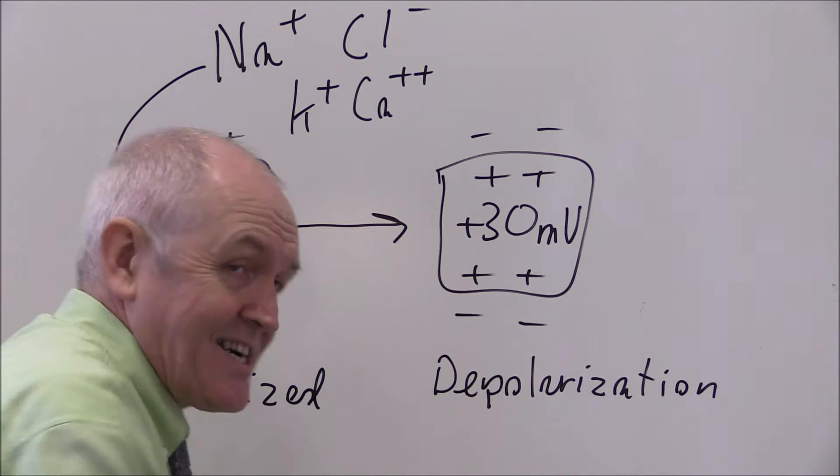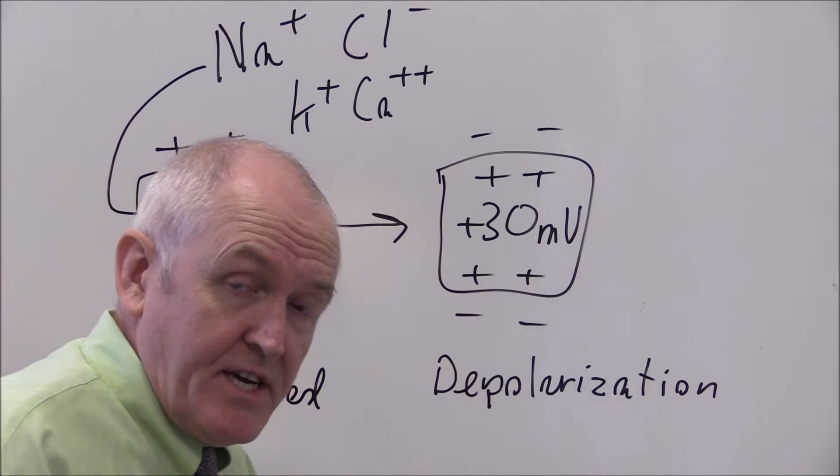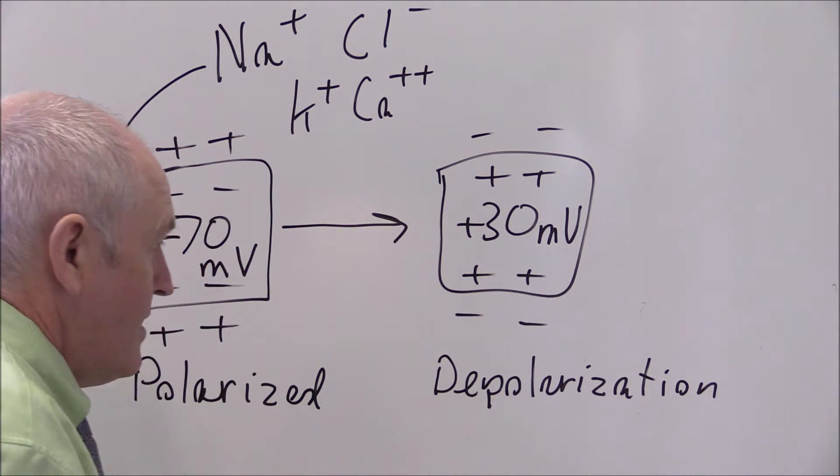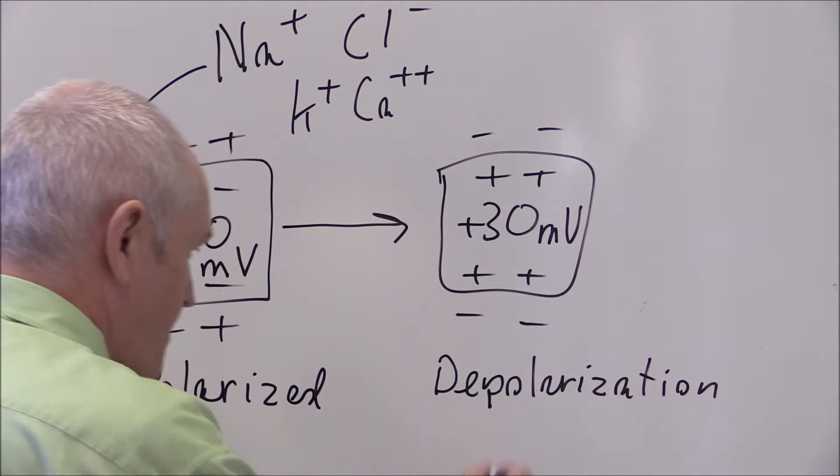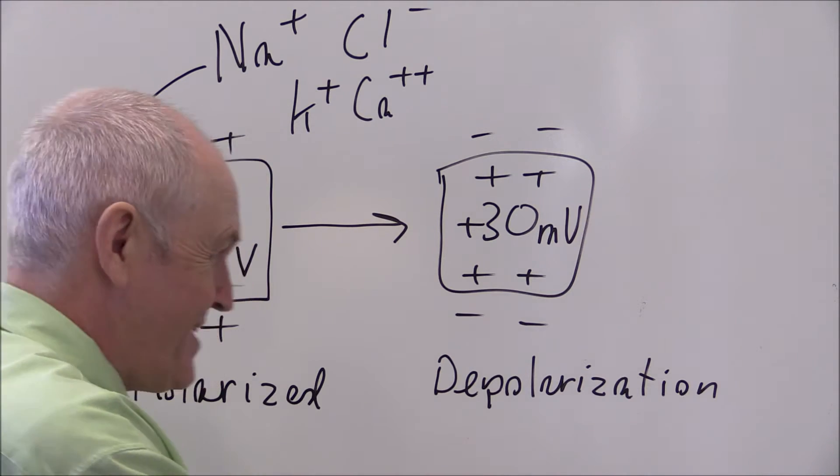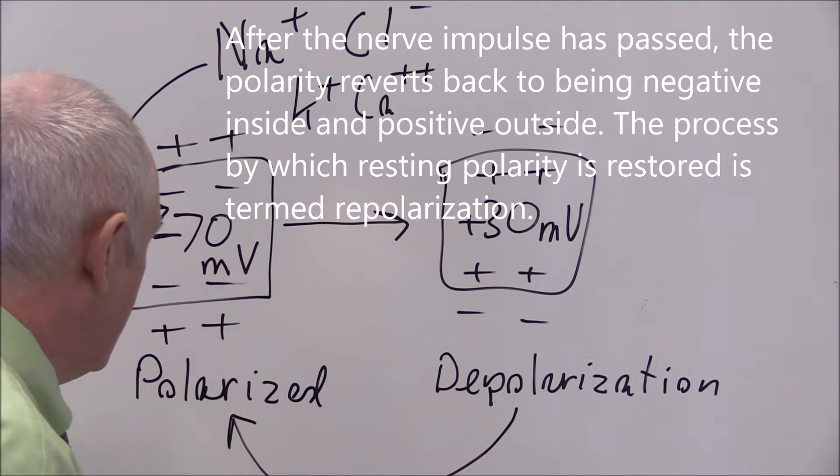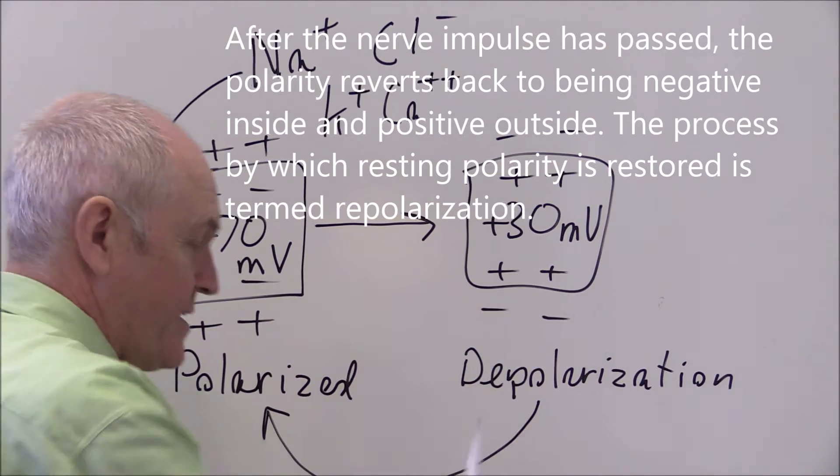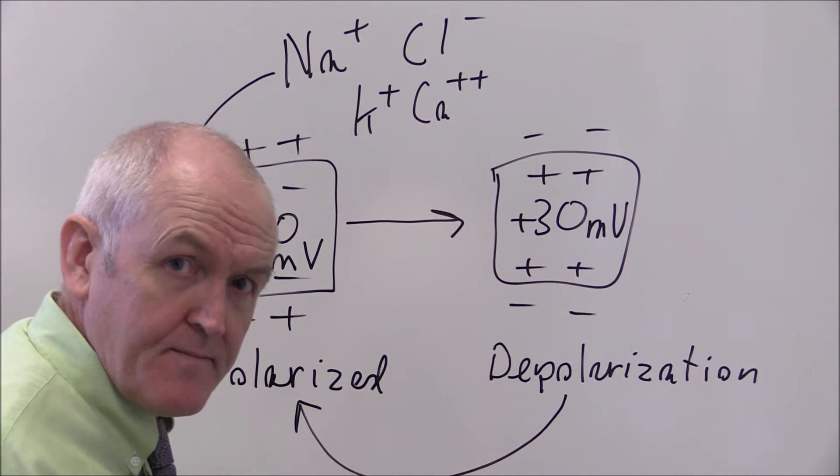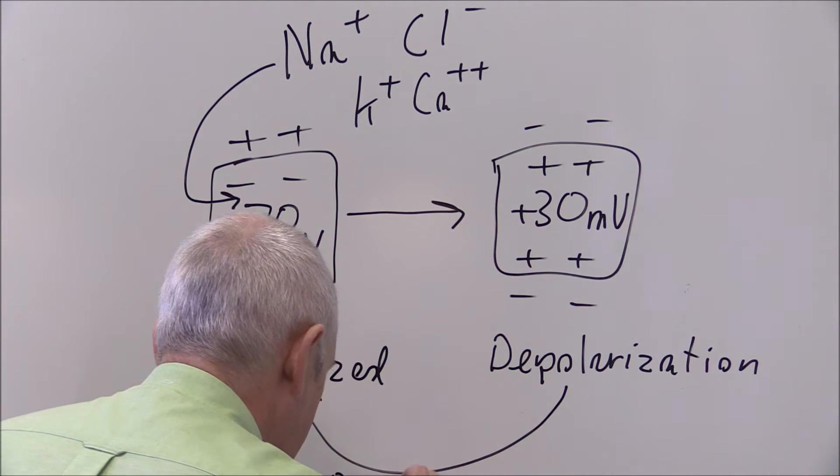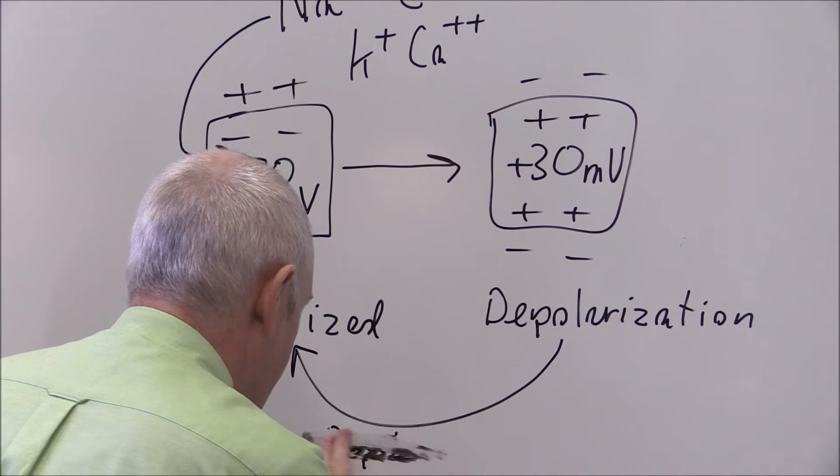So a nerve impulse is actually this depolarization. That's what a nerve impulse is. Of course if we want another nerve impulse to come along in a minute or considerably less than a minute, we need to become polarized again. Because it's only when we are polarized that we can become depolarized. So there has to be this process of depolarization. Sorry, repolarization.